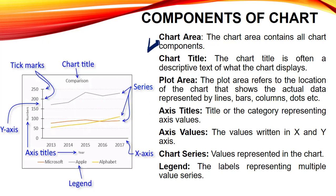The first component is chart area — the area or block which contains the chart along with all its components is termed as chart area. For example, the rectangular block inside which we have the chart with all the labels and data values is our chart area. Next is chart title — at the top of the chart, it is necessary to include a title. This title helps us understand the type or subject of our chart.